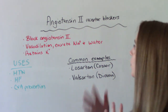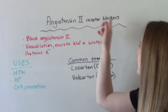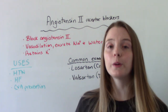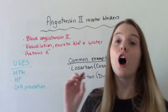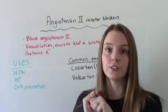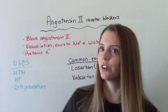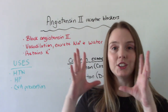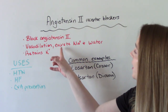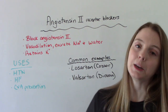First of all, what do they do? They do exactly what they sound like. They're angiotensin 2 receptor blockers — they block angiotensin 2. And if you remember, angiotensin causes vasoconstriction, so the narrowing of your blood vessels. So they stop it from doing that, resulting in vasodilation, so your blood vessels dilate and get wider. They also excrete sodium and water, and retain potassium.